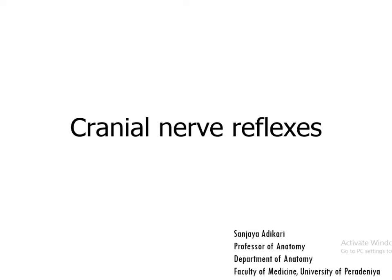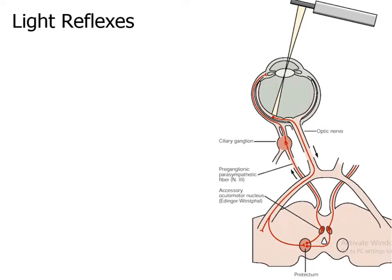Some of the cranial nerves are involved in reflexes. First we will consider the light reflexes. There are two types of light reflexes: the direct light reflex and the consensual light reflex.